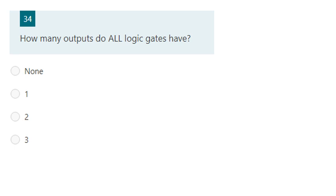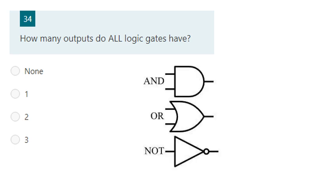How many outputs do all logic gates have? Remembering the logic gates we saw — AND, OR, and NOT — we can see that each one of these logic gates has one output.